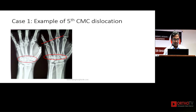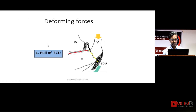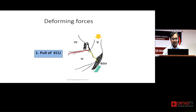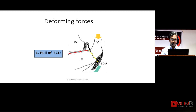Here again there is a fifth metacarpal carpometacarpal dislocation with the tangential line drawn — the metacarpophalangeal joint is not aligned. Due to deforming forces on the fifth metacarpal from the ECU and the abductor, you need to reduce and stabilize it.